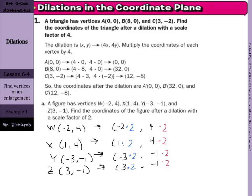We're also going to take each of our y's and multiply those by 2. Our new image W prime is (-4, 8), X prime is (2, 8), Y prime is (-6, -2), and Z prime is (6, -2).